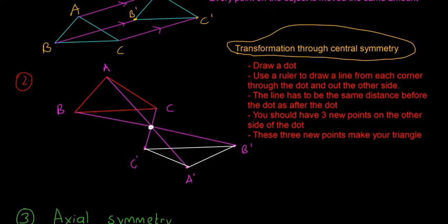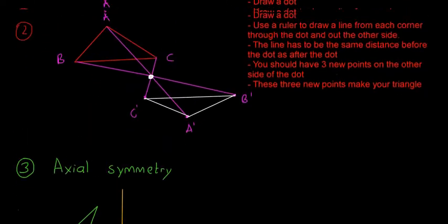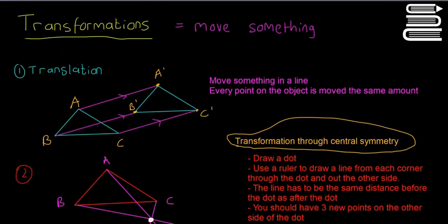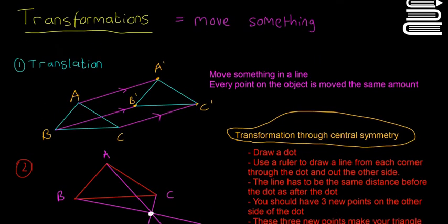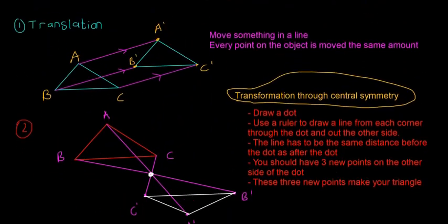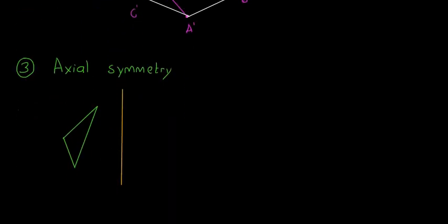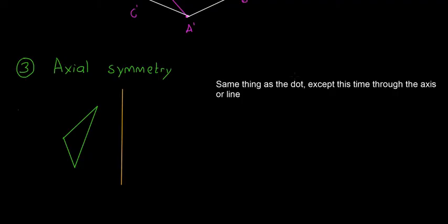So these are all just methods they could ask you to do or talk about during the exam, so you might have to understand how they're done. The last one is axial symmetry. This one is basically the same thing as above, except this time instead of going through a dot, we go through this central axis or through the line.